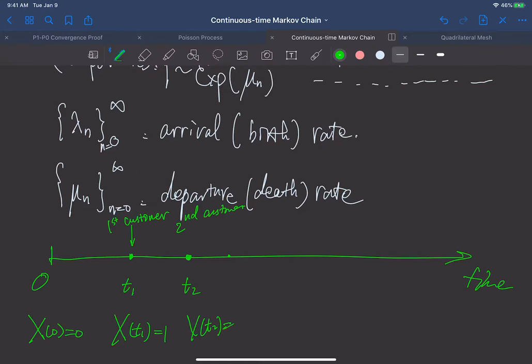And the first customer who entered the service after maybe, say, some time. The service time of the customer, the first customer. And right here, the first customer leaves this queue. And this is t_3, which is the third time this Markov chain changes state.